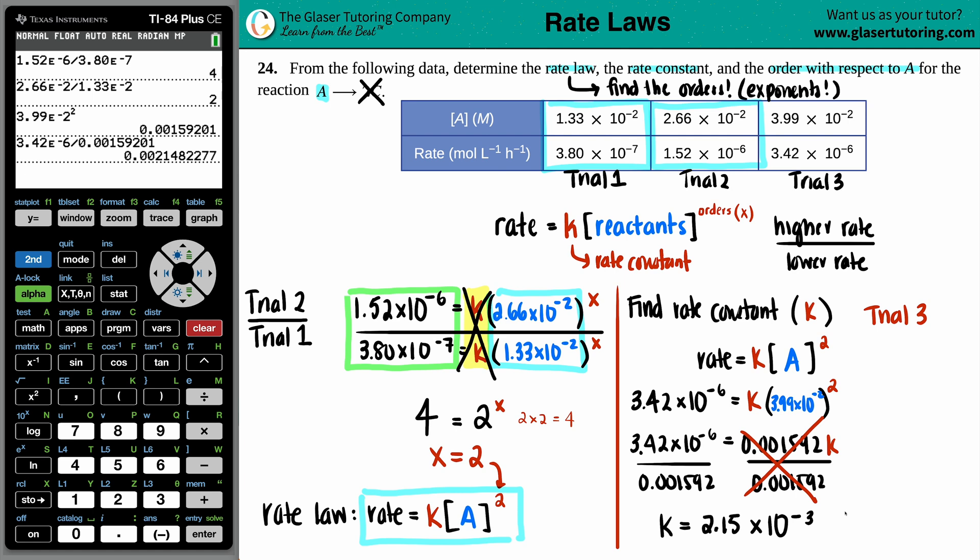But now the thing is that the K value units are very tricky. Because depending on the overall order, the units of K are going to change. So, what we're going to do is maybe we'll find out the final question. They wanted to find out the order with respect to A. So, the order with respect to A, this is just a fancy way for saying, what is A's order? So, the order with respect to A, what was the A's order? That's what we found out. There was only one reactant. So, the order that it was, was the second order. So, that's easy. And now, from this information, we can find out the K value. Because, depending on the overall order, which, by the way, the overall order is the sum of all the orders. But since we only had one reactant and it was second order, the overall order is going to be second order here.